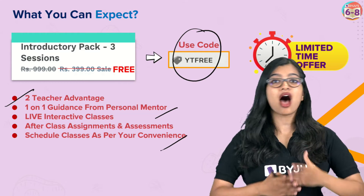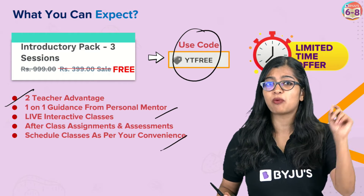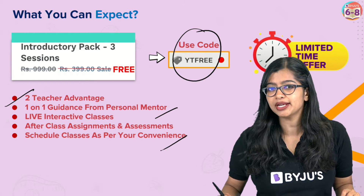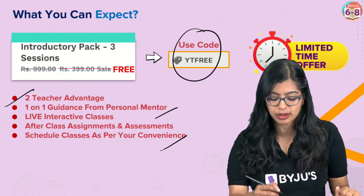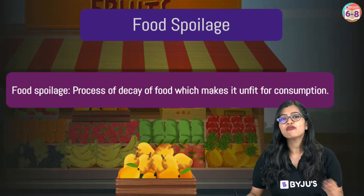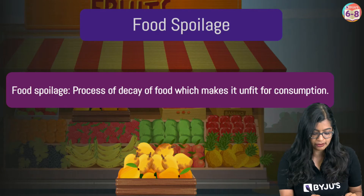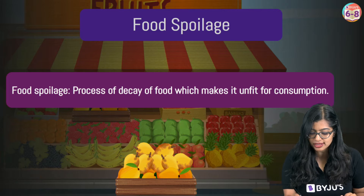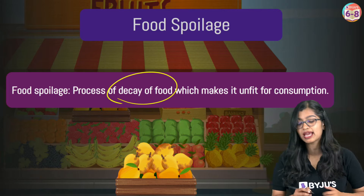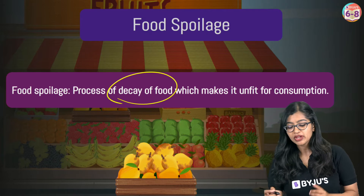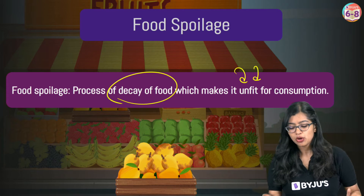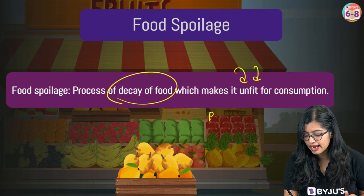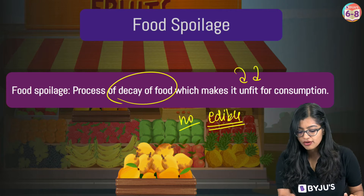Our class is going to be about understanding spoiled food. We need to first have a basic understanding of what we mean by food spoilage. Food spoilage can be simply defined as the process of decay of food that makes it unfit for consumption, which means it is no longer edible and we cannot consume it.